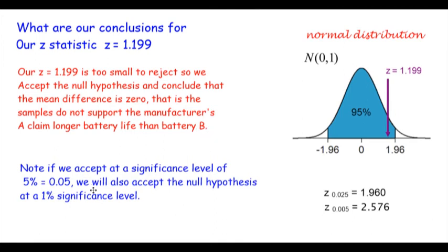Obviously, if we are accepting at 5%, we'll accept at 1% as well. These values you can see here are coming from the normal distribution: 1.960. At a 1% level, you've got half a percent up and half a percent down.